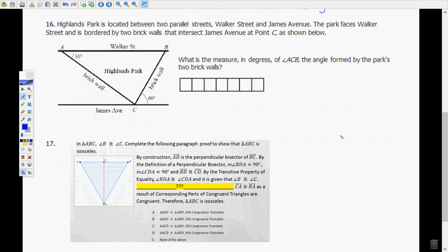Number 16, Highlands Park is located between two parallel streets. Walker Street, and I like to mark my parallel streets, and James Avenue. Those are parallel. That reminds me of some important information when I get to it. The park faces Walker Street.